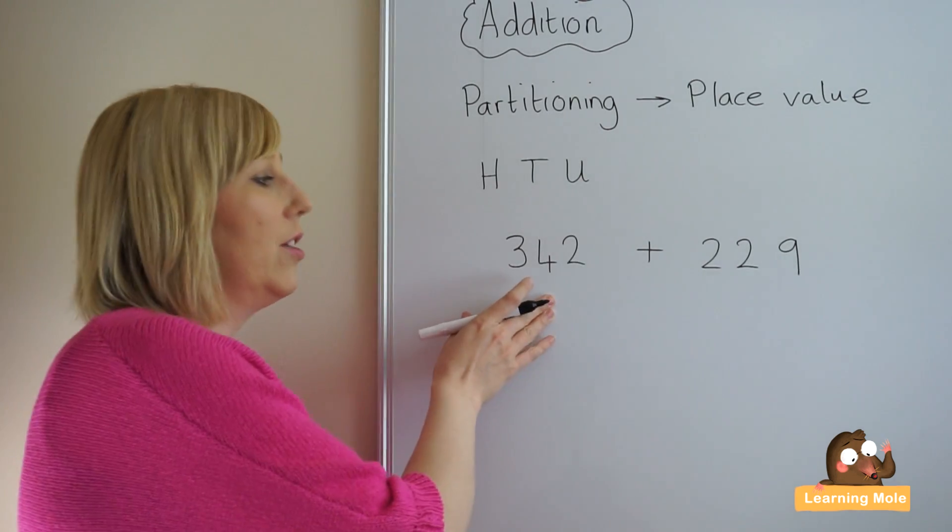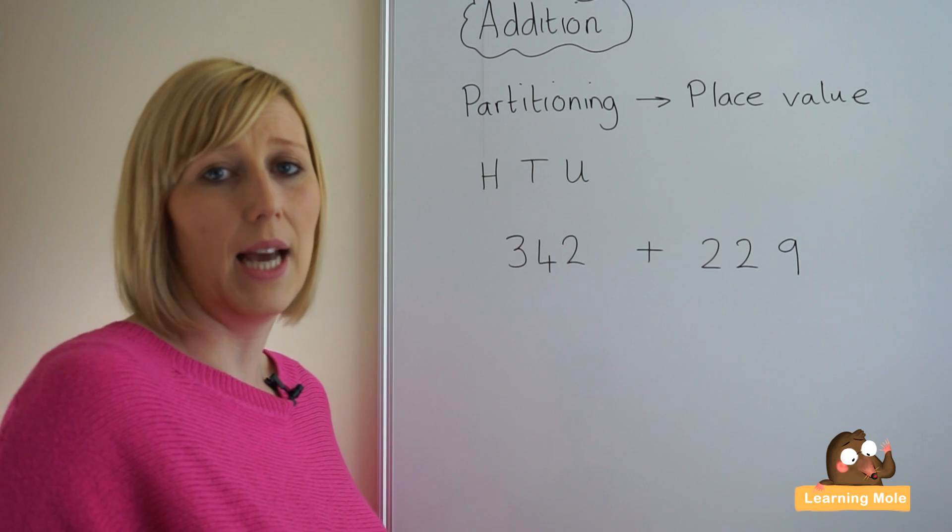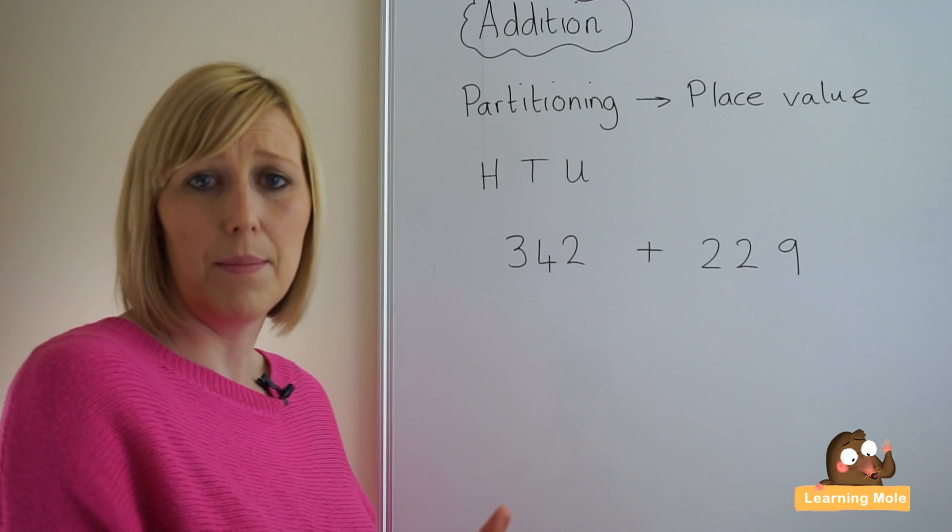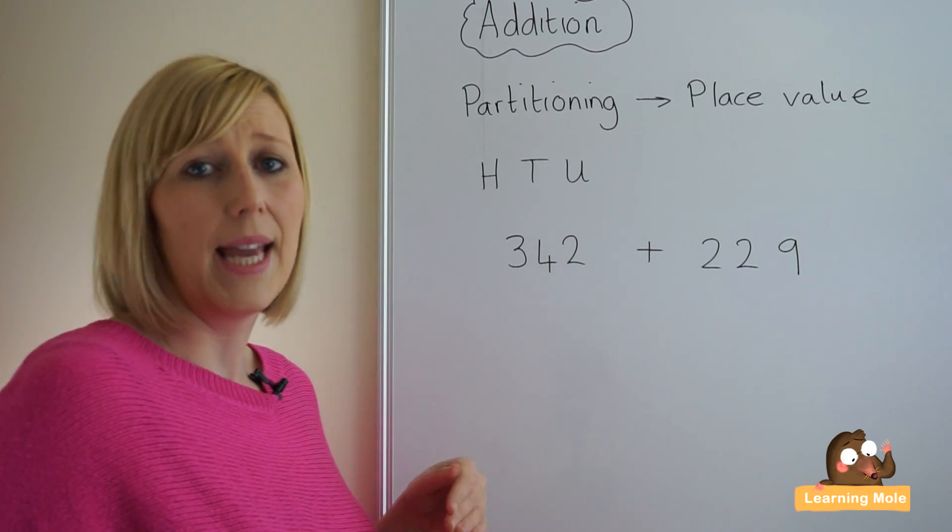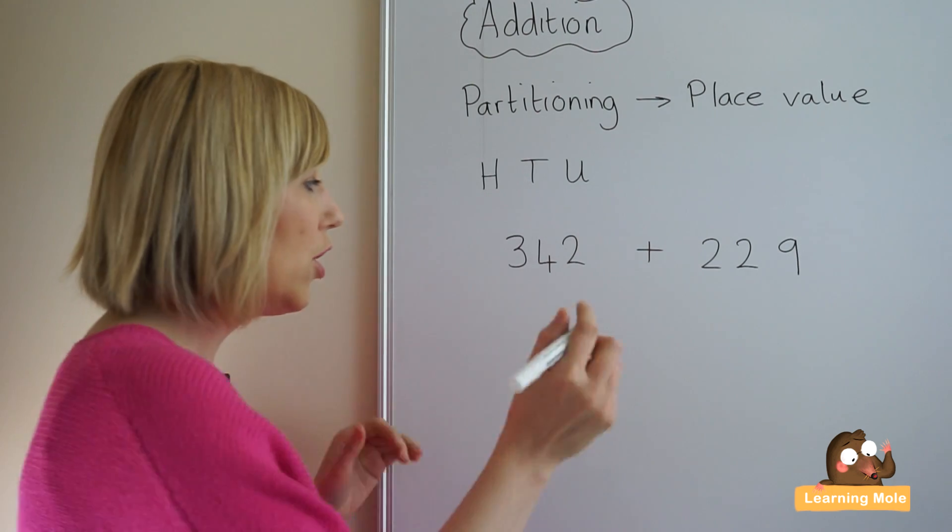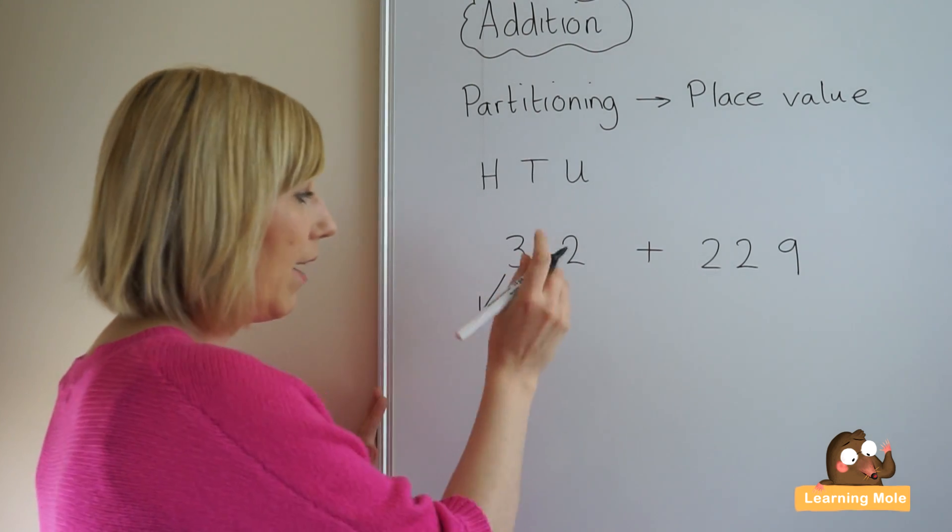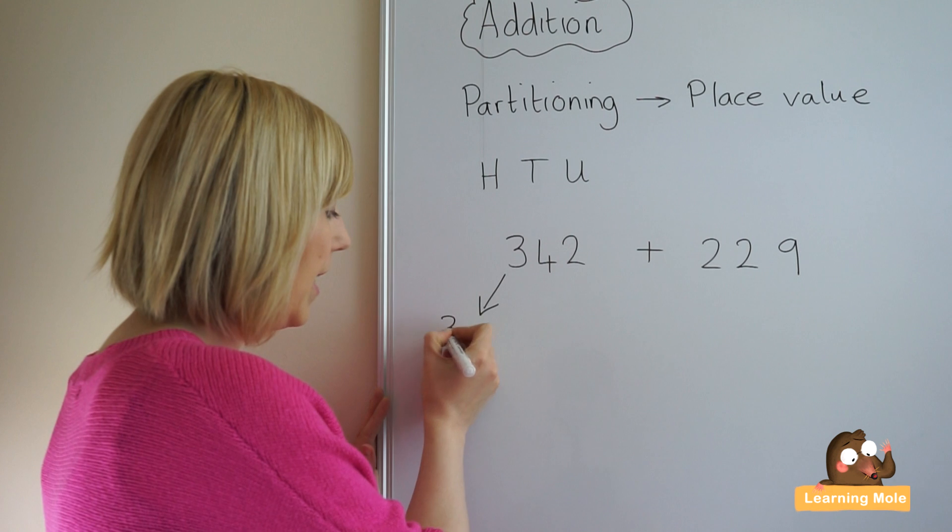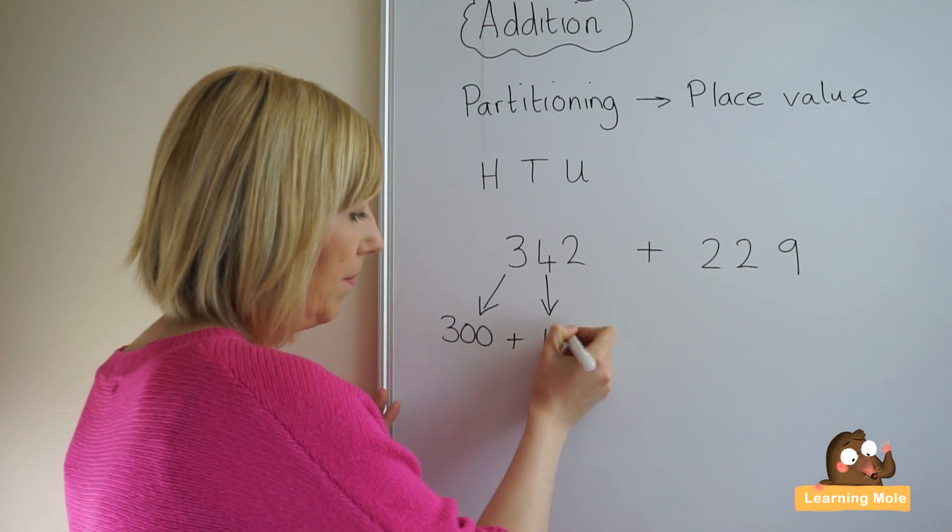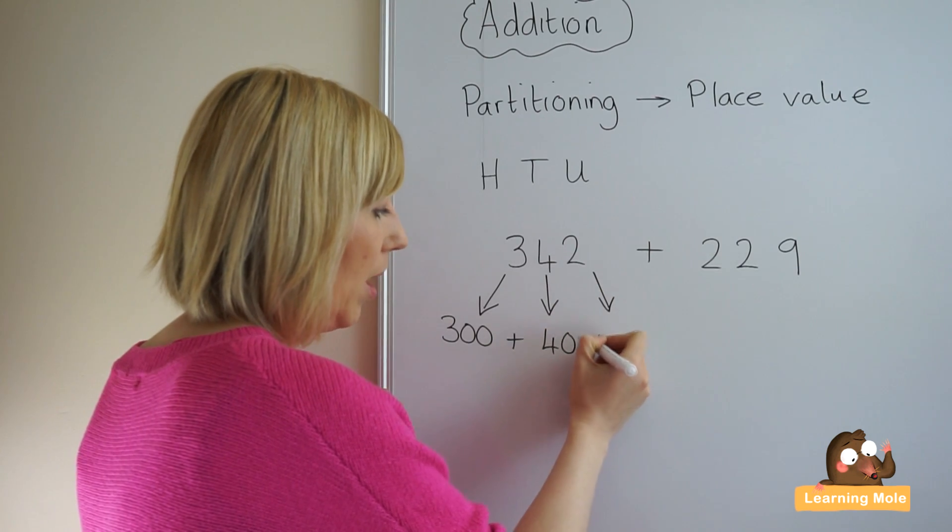So looking at the calculation 342 plus 229. So our step number one is to partition, to segment, to break up those numbers into our place value, into our hundreds and tens and units. So partitioning 342 up, we have 300 plus 40 plus 2.